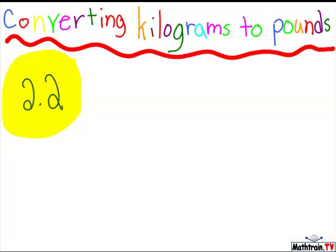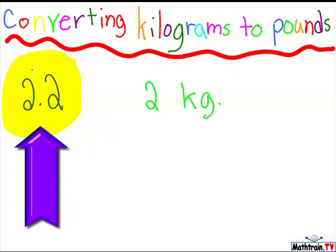Okay, so if you had 2 kilograms, and the abbreviation for that is kg, and you want to convert it into pounds, you multiply by the magic number, which is right here, 2.2.